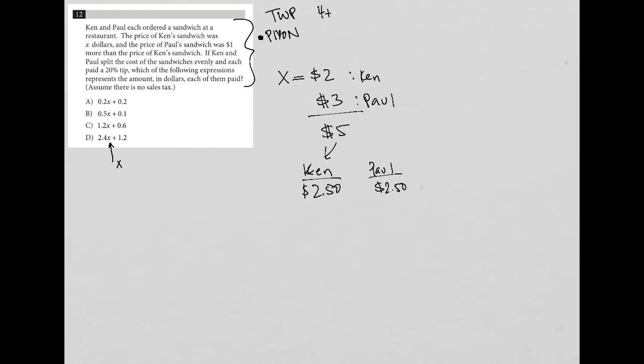And each paid a 20 percent tip. OK, well, 20 percent tip on this test, we always turn our percentages into decimals. So 20 percent turns into 0.2. So 0.2 times 2.5, that is 20 percent of two dollars and 50 cents. Remember, this is the non calculator section. So we could multiply this off to the side.